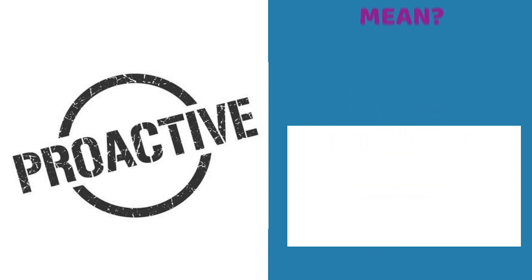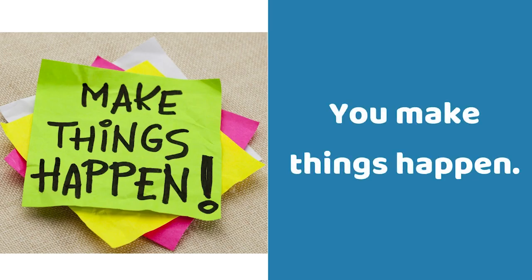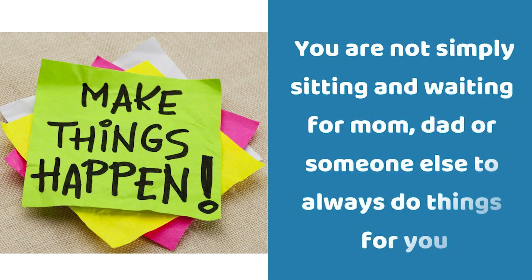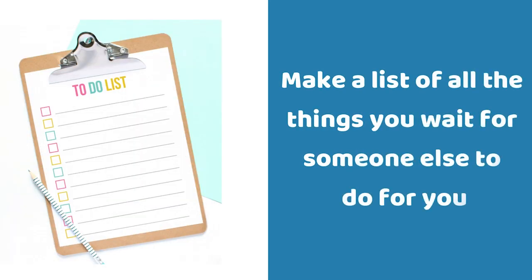Let's start with lesson one: what does being proactive mean? You make things happen. You are not simply sitting and waiting for mom, dad, or someone else to always do things for you. Make a list of all the things you wait for someone else to do for you.